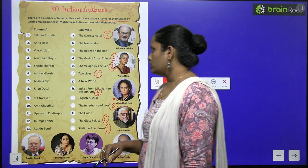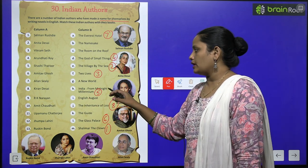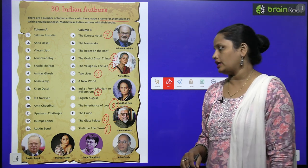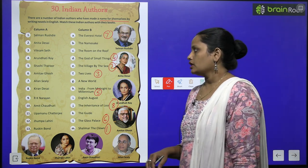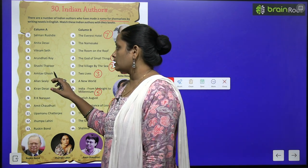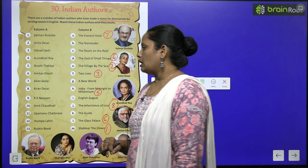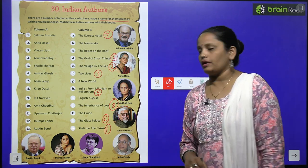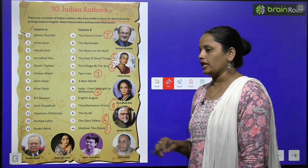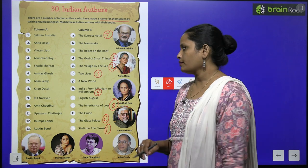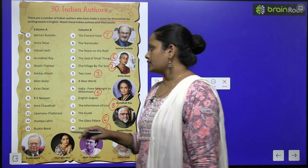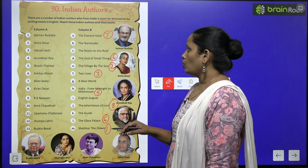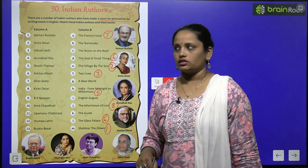Fifth, Shashi Tharoor — inhone jo book likhi us ka naam hai India: From Midnight to the Millennium. Sixth, Amitabh Ghosh — inhone jo book likhi us ka naam hai The Glass Palace. Next, Allan Sealy wrote The Everest Hotel.